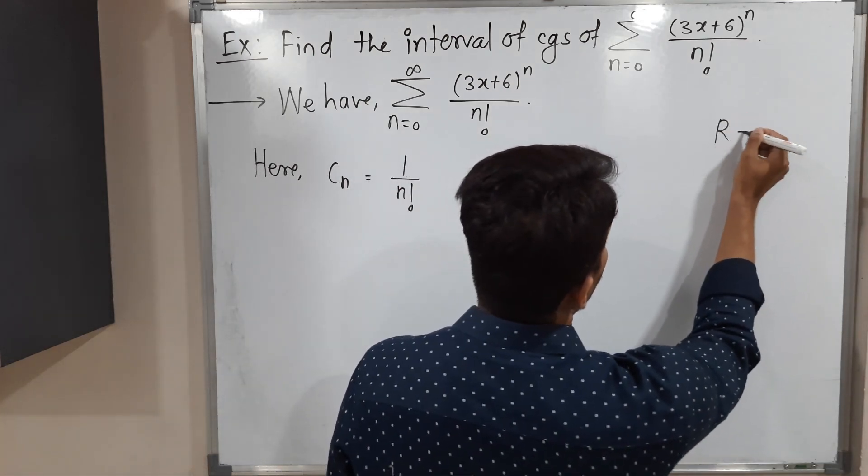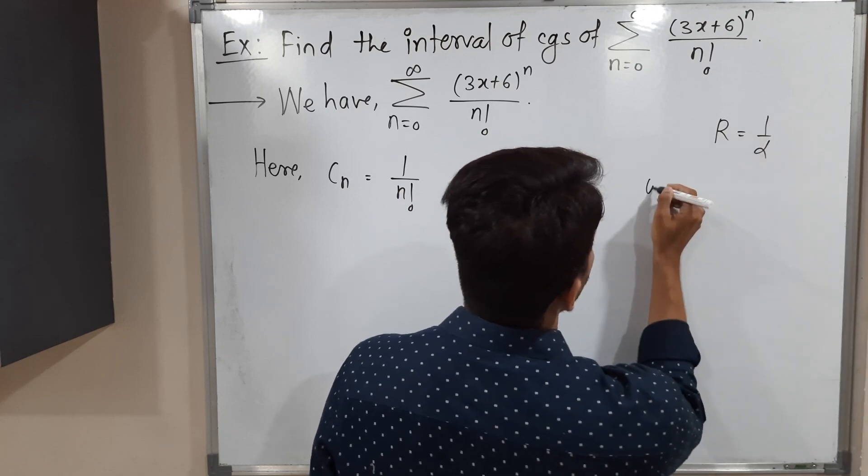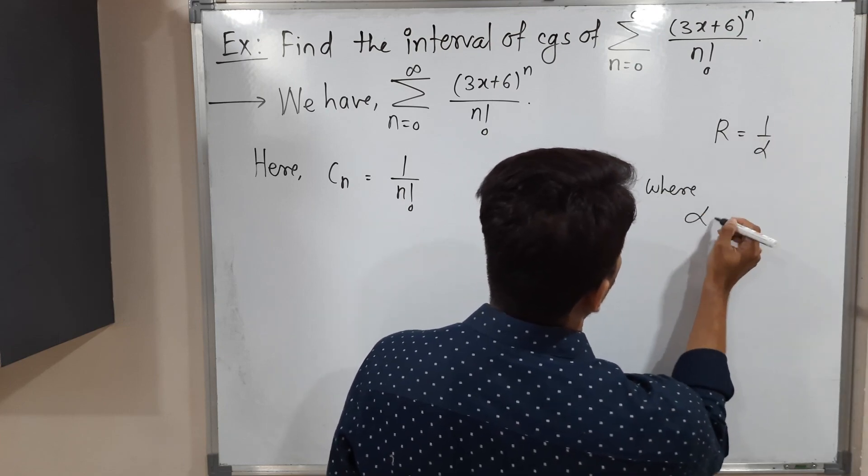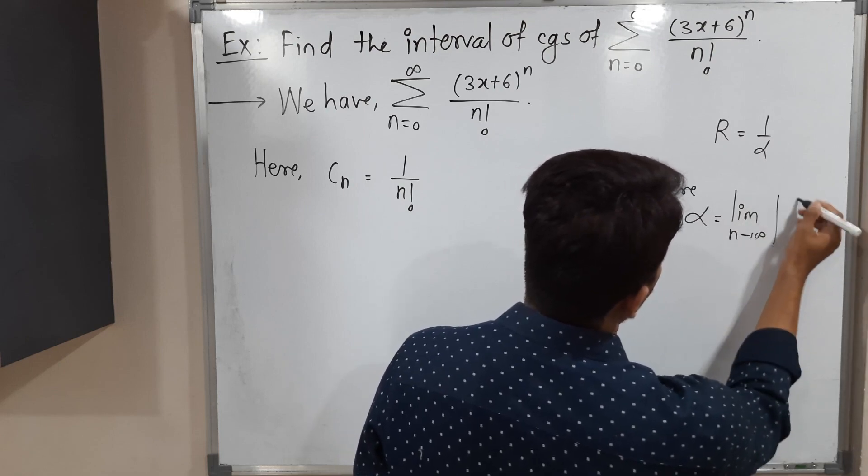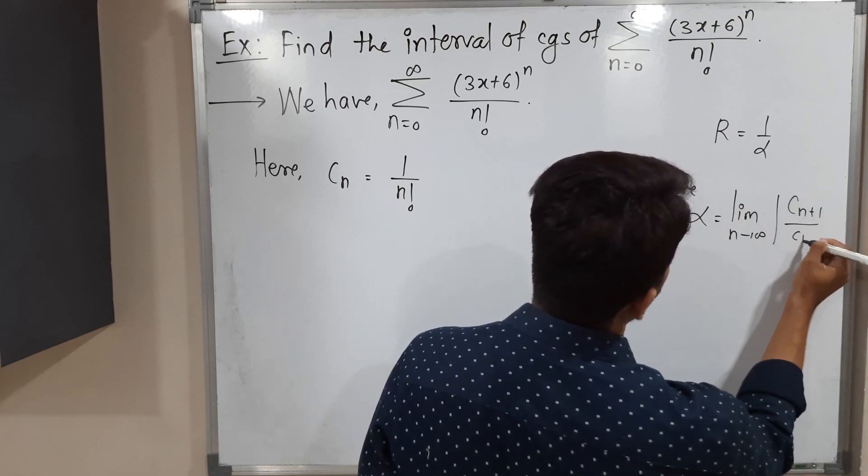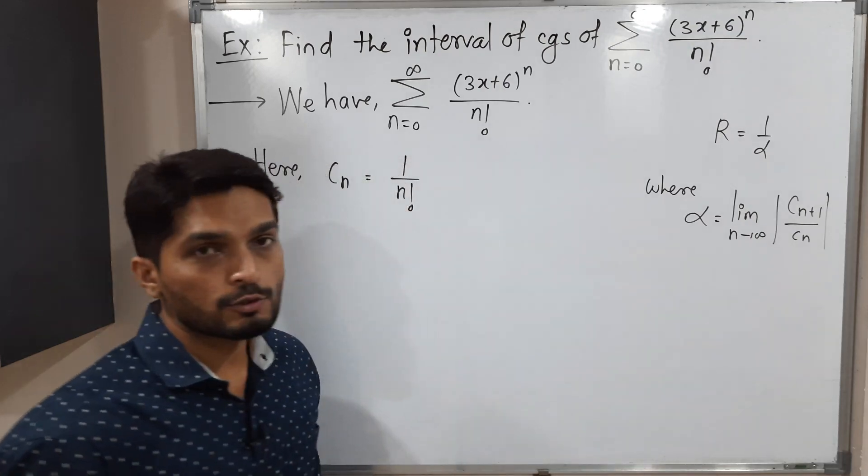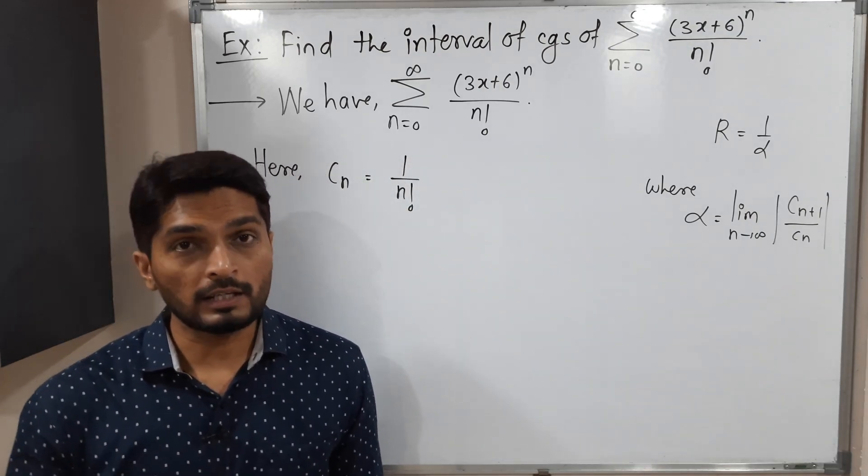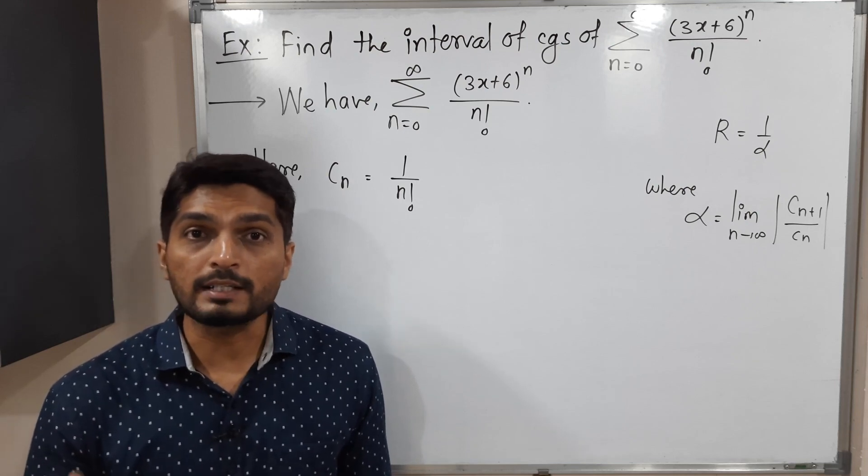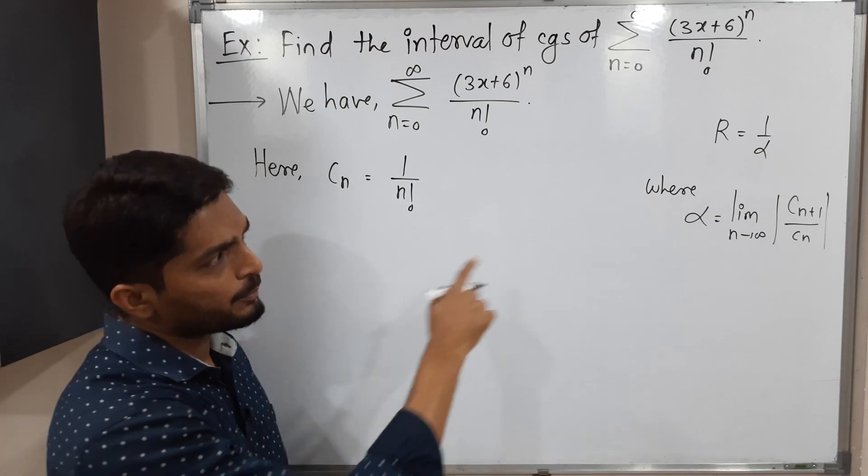The radius of convergence is the reciprocal of alpha, where alpha can be calculated this way: limit n tends to infinity mod cn plus 1 upon cn. Actually, alpha has two distinct formulas. They will give us the same value. As per our convenience and the need of the problem, we decide the formula. For this problem, that formula is better.